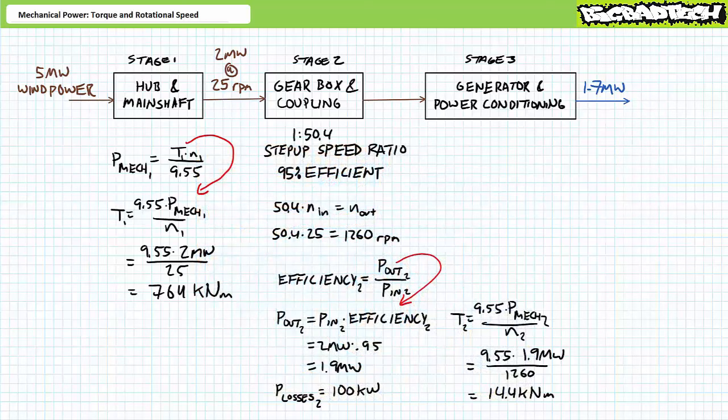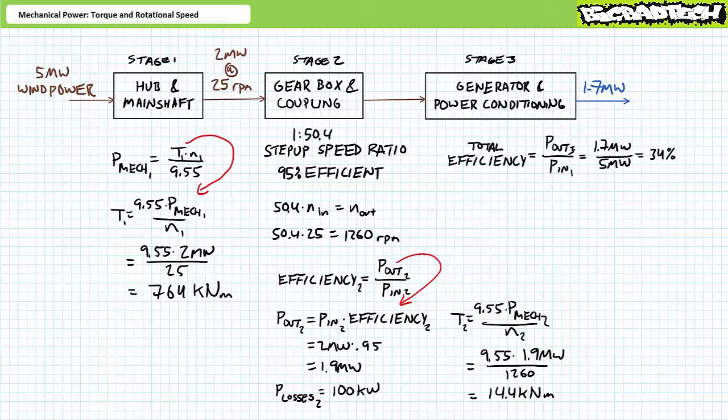Consider the efficiency of this complete system: of the available 5 megawatts of wind power, the turbine delivers only 1.7 megawatts of usable real electrical power output to the grid — an efficiency of only 34%. Some people are quick to seize on this figure, but wind turbines use free fuel. Yes, renewable energy systems are initially more expensive to install and require maintenance, and balancing intermittent distributed sources like solar and wind is more complex than traditional centralized generation. But when the wind blows or the sun shines, the fuel falls from the sky.